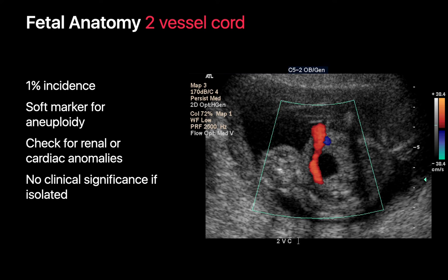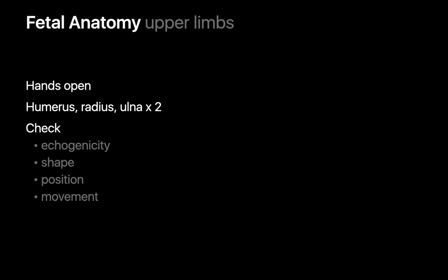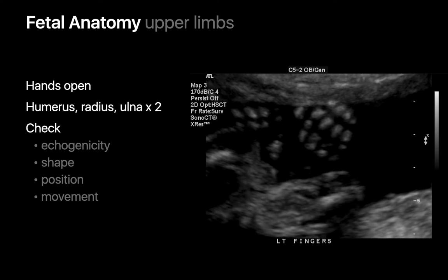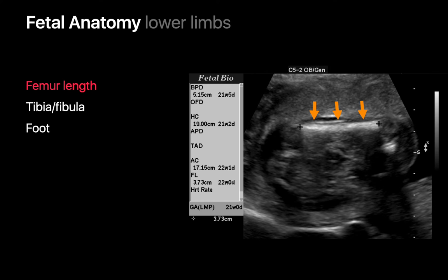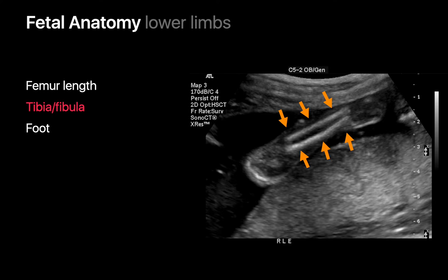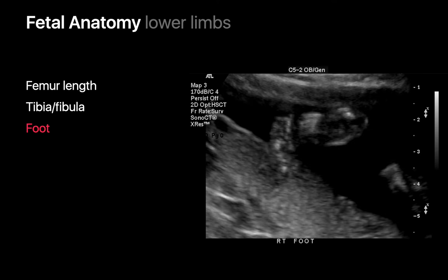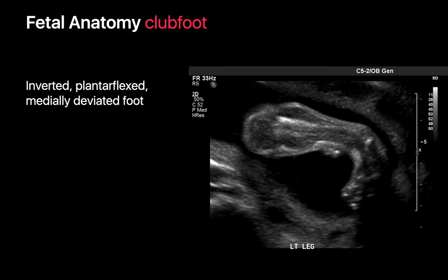We finish with an assessment of the fetal limbs. For the upper extremities, we evaluate the humerus, radius, and ulna on both sides, how the upper extremities move, and ideally the fetal hands and fingers. Our evaluation of the fetal legs involves measurements of femoral length, evaluation of the echogenicity, shape, and position of the tibia and fibula, and finally the feet and ankles. This is the portion of the fetal assessment where we can catch anomalies like clubfoot.